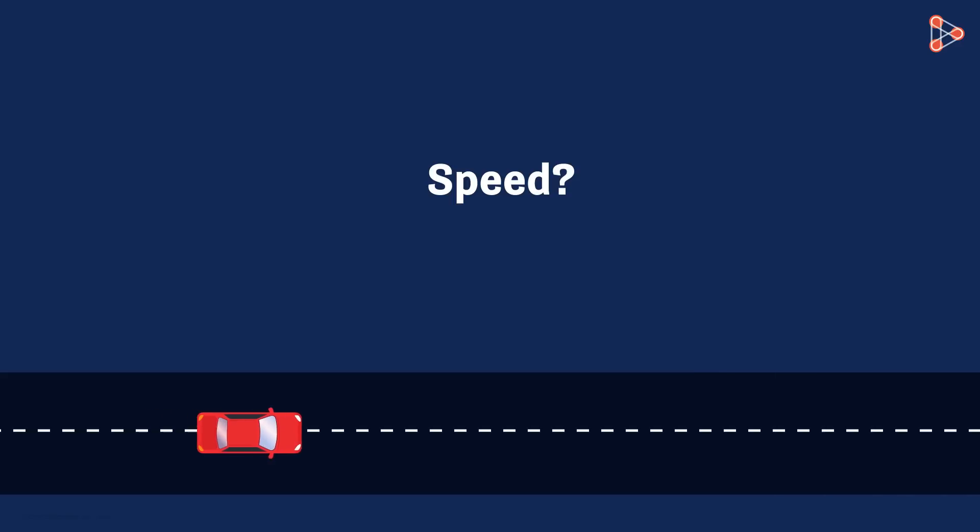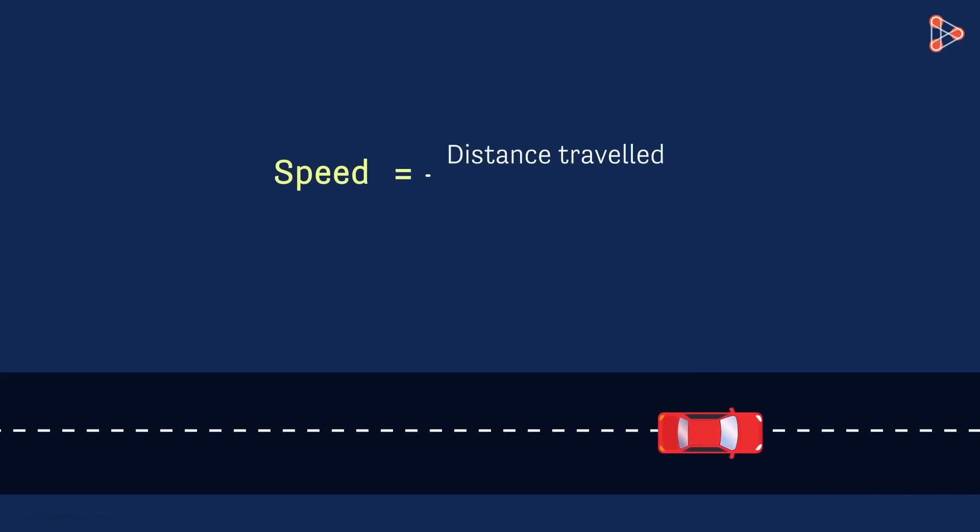First of all, how will you define the speed of an object moving along some path? The speed of an object is the distance travelled by an object over the time it takes to complete that distance.